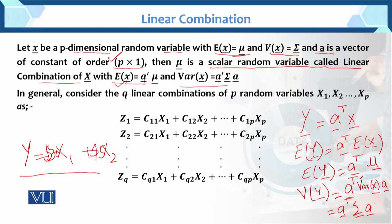We can also write it as a-sigma-a-transpose, checking according to how matrix or vector multiplication exists. In general, consider the q linear combinations of p random variables x1, x2, up to xp. This set of linear combinations is called the linear compound.